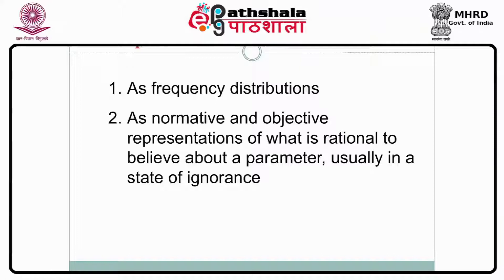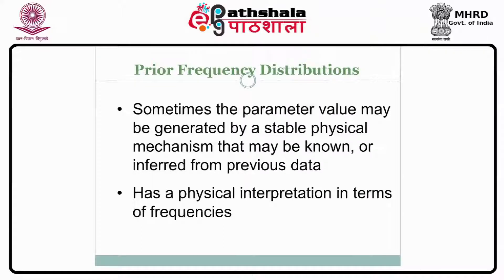We can interpret the prior distribution to be a frequency distribution, or it may be a normative and objective representation — in particular, in a case of ignorance where we do not have any idea about the parameter theta. What is a prior frequency distribution? Sometimes the parameter value may be generated by a stable physical mechanism that may be known or inferred from previous data. In many situations it has a physical interpretation in terms of frequencies, and the priors are obtained in terms of frequencies. You look at the histogram of the prior and it looks like the behavior of the distribution is something like normal or gamma or some other standard distributions.